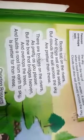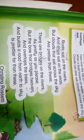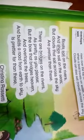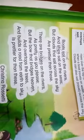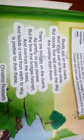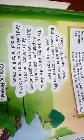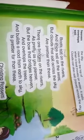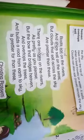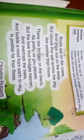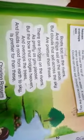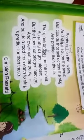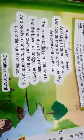Now we come out with starting our poem. Boats sail on the rivers. کشتیاں دریاؤں پر چل رہی ہیں. And ships sail on the seas. اور جب بحری جہاز ہیں وہ بھی سمندروں پر چل رہے ہیں. But clouds that sail across the sky — لیکن بادل آسمان پر سفر کر رہے ہیں — are prettier than these. اور یہ اس سے بھی بہت زیادہ خوبصورت لگ رہے ہیں.